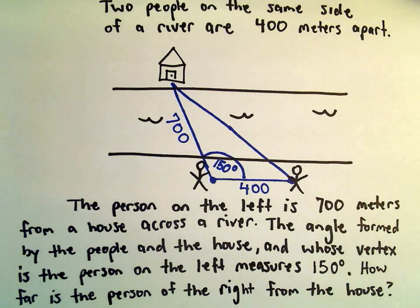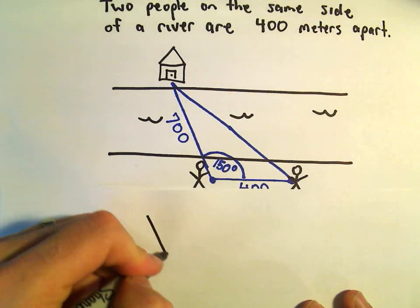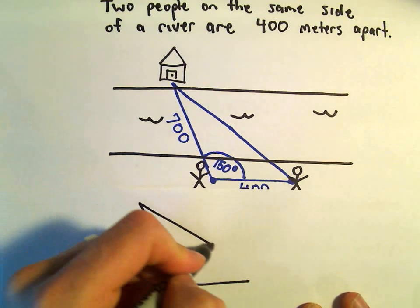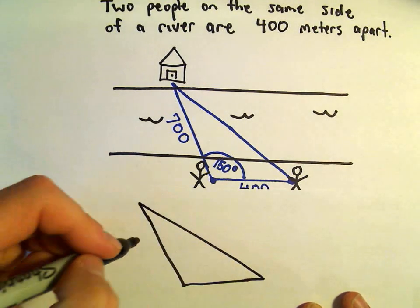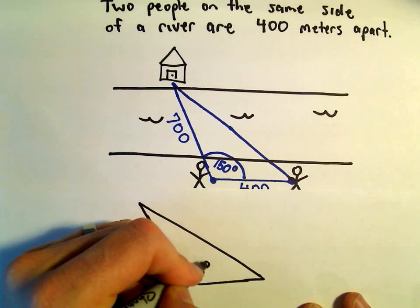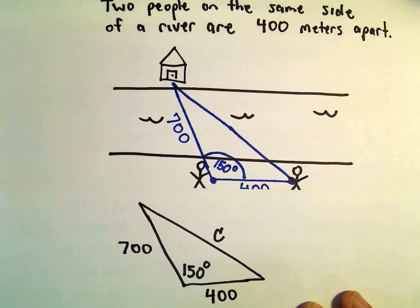This is really a pretty straightforward application of the law of cosines. So this is 700. We know that this is 150 degrees. This is 400. We can call this length maybe C.